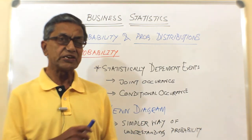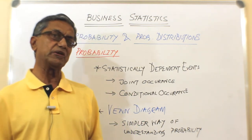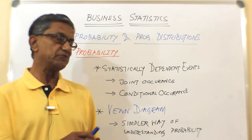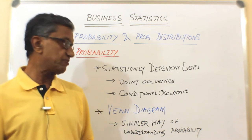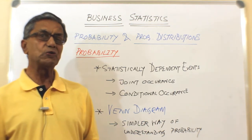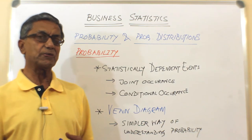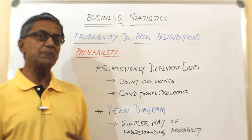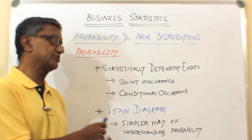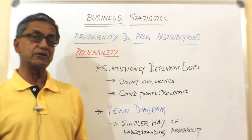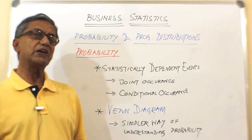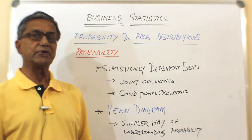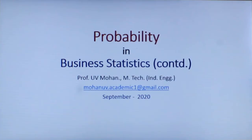These are all statistically dependent events, and we will understand how probability applications work for them. A Venn diagram is an easier way of representing various events in pictorial form to understand probability of a situation. Many complex probability situations can be represented on a Venn diagram for better understanding. We will now move on to the PowerPoint presentation and understand statistically dependent events.